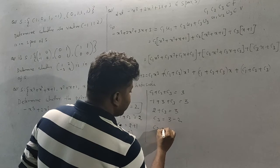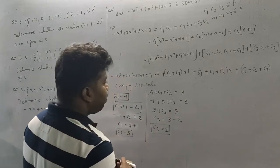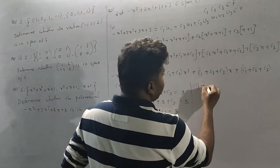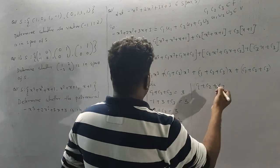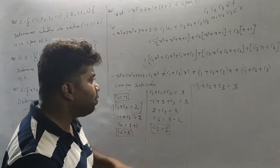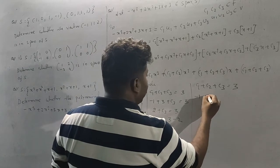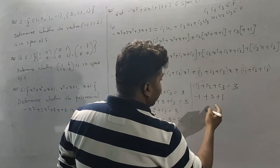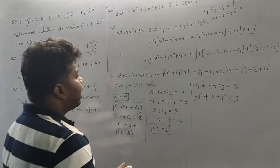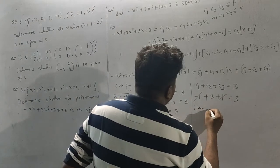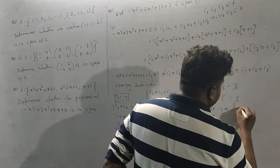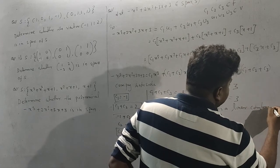From C1 + C2 + C3 = 3: substituting C1 = -1 and C2 = 3 gives -1 + 3 + C3 = 3, so C3 = 1. Checking the constant term C2 + C3 = 3 + 1 = 4... the value of C3 satisfies the equation. Hence the polynomial is a linear combination of the given vectors.